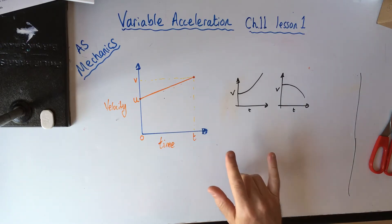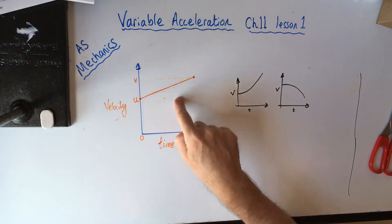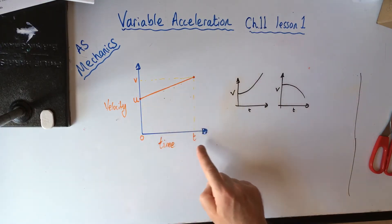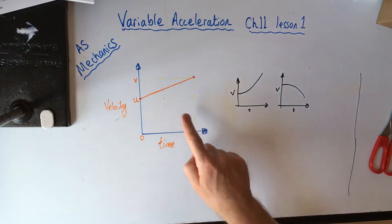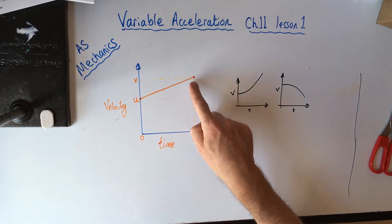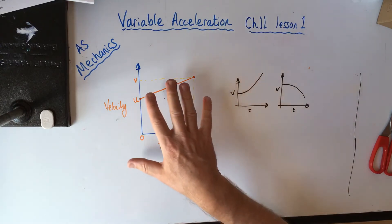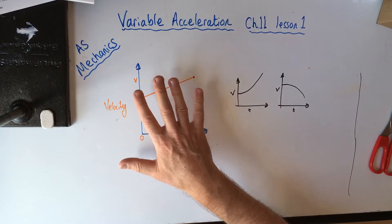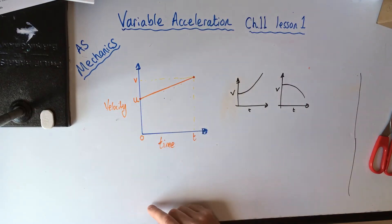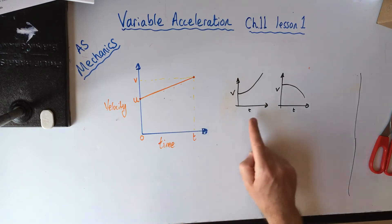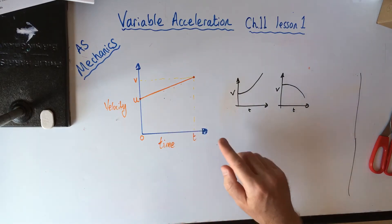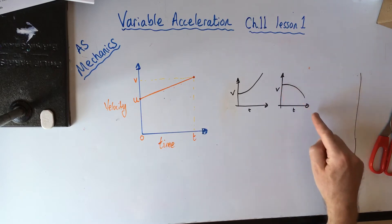We're going to be talking about not the SUVAT equations — this velocity-time graph I've drawn where we get constant acceleration. We're going to be looking at what happens when acceleration is variable, in other words it increases or decreases.